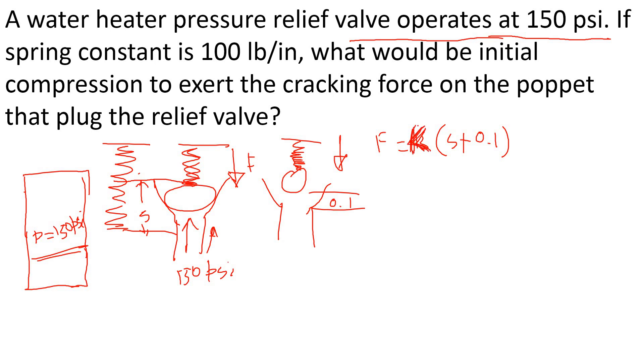K is the spring constant, and then S is the initial compression. So this is the total compression and the full flow, whatever that amount to be lifted to make the full flow.